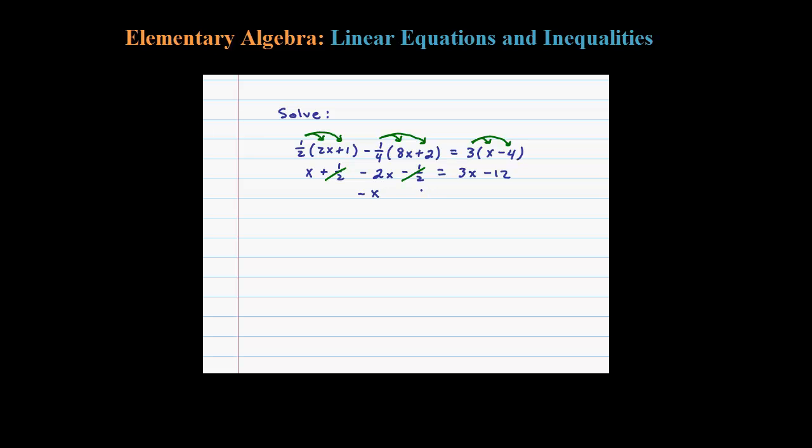Negative x equals that 3x minus 12. So let's combine our x terms now by subtracting this 3x to the left side, and that gives you negative 1x minus 3x is negative 4x.